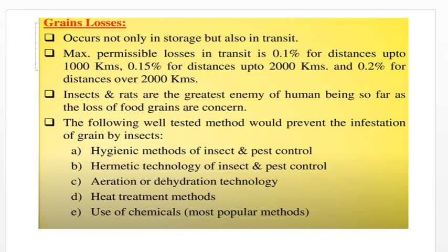Grain losses during transit — maximum permissible losses in transit are around 0.1% for distances up to 1000 km, 0.15% for distances up to 2000 km, and 0.2% for distances over 2000 km. Insects and rats are the major cause of food grain losses.